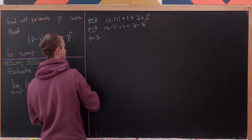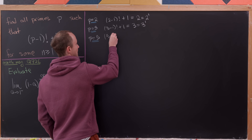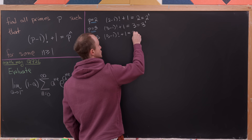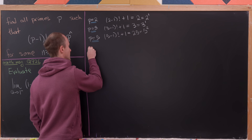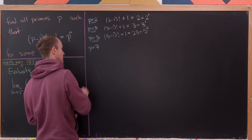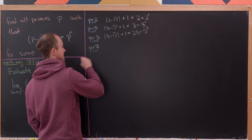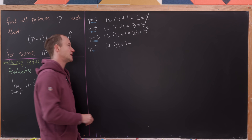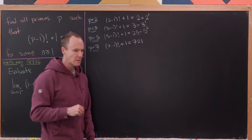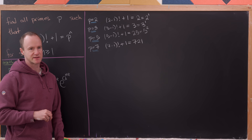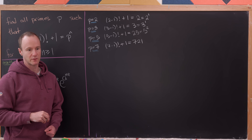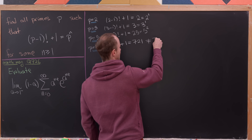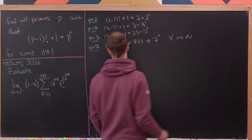Moving on to p = 5: (5-1)! + 1 = 4! + 1 = 24 + 1 = 25, which is 5². But in the case when p = 7, we do not get a solution. Here we have (7-1)! + 1 = 6! + 1 = 720 + 1 = 721. Now 7³ = 343 and 7⁴ is in the 2000s, so 721 is skipped — it does not equal 7^n for any natural number n, meaning no solution here.